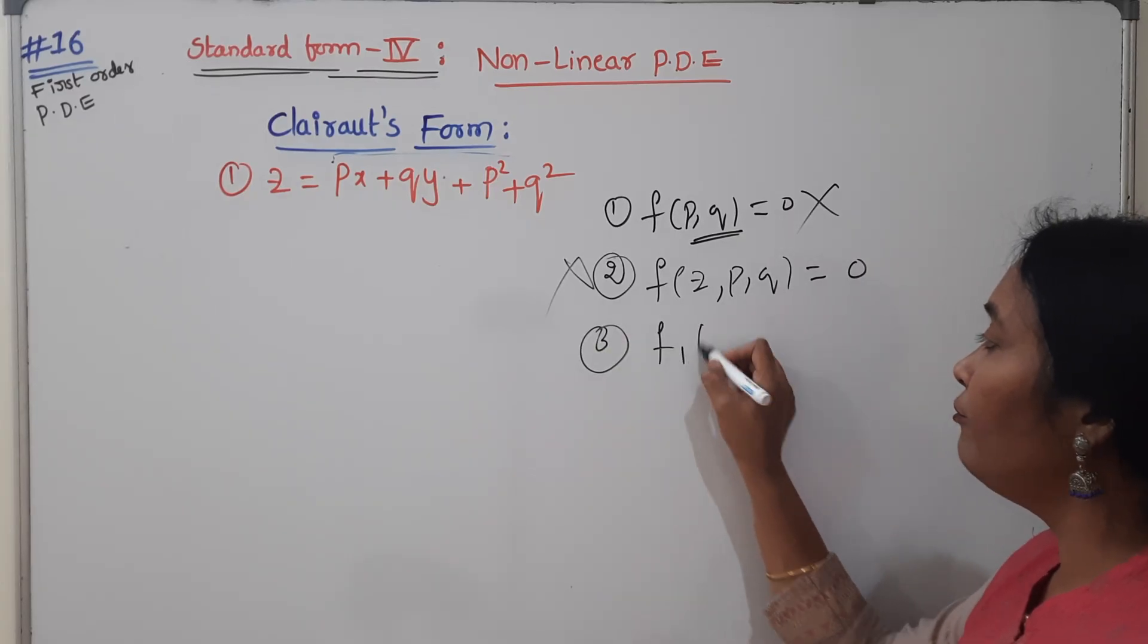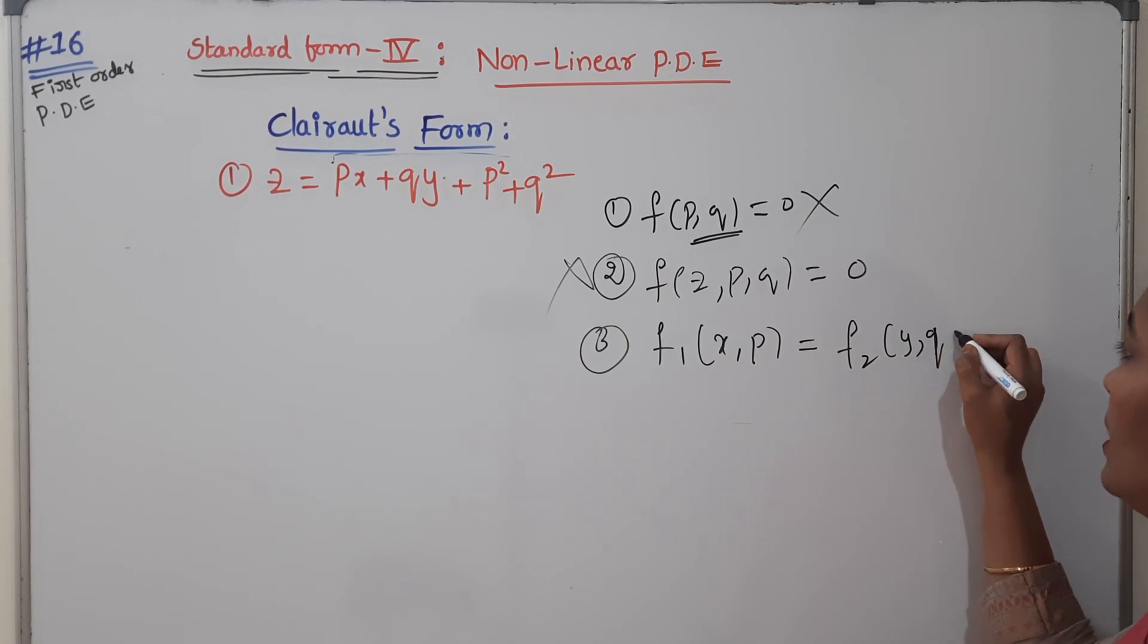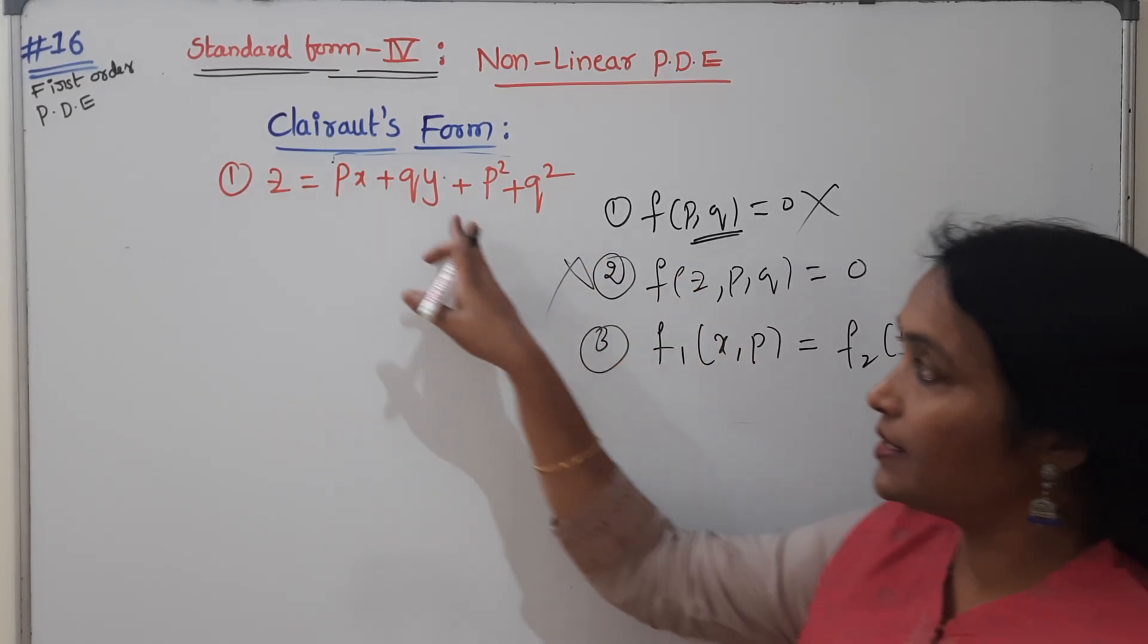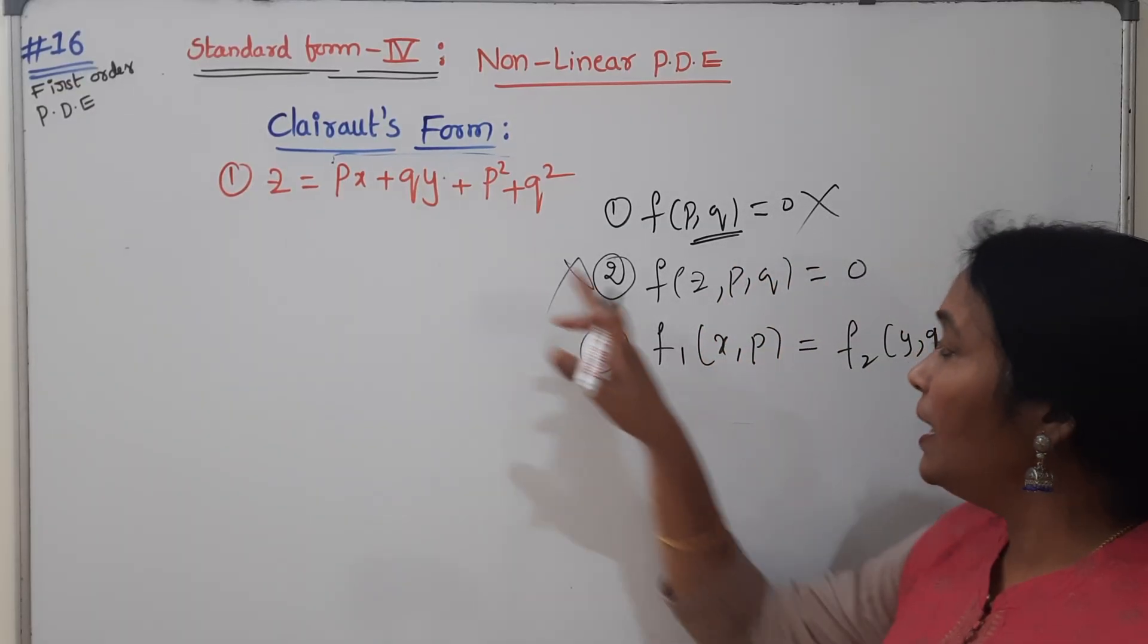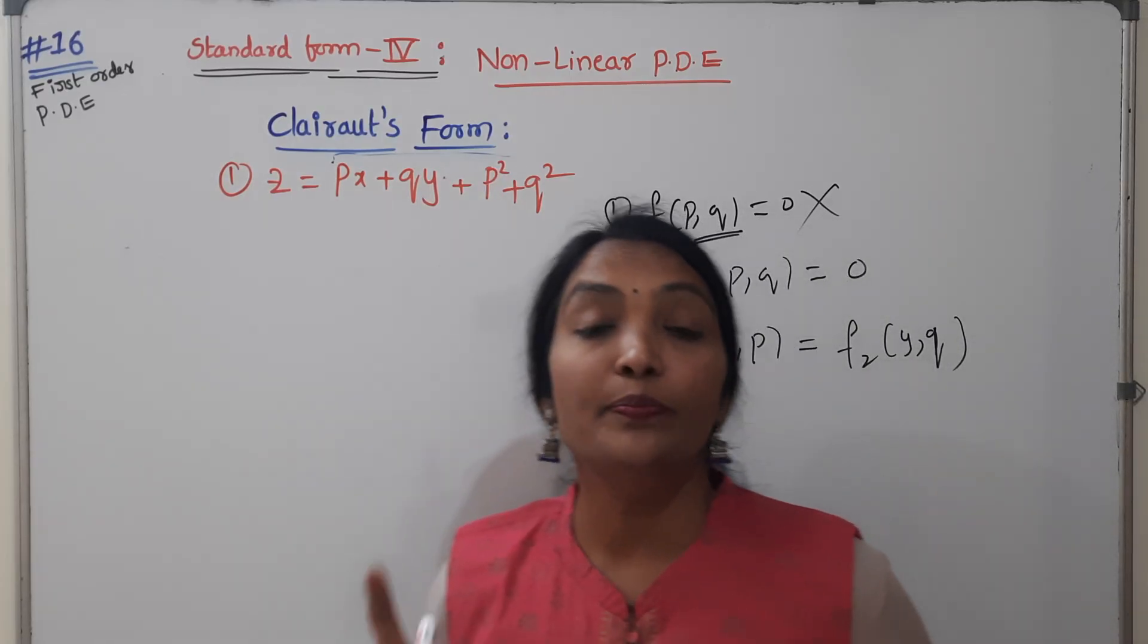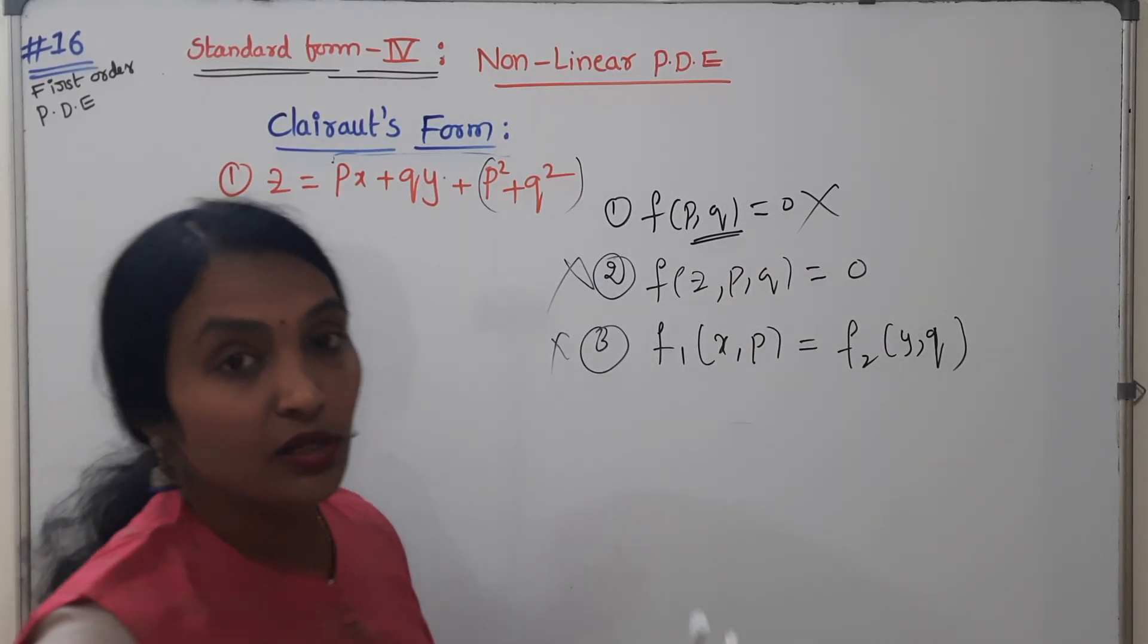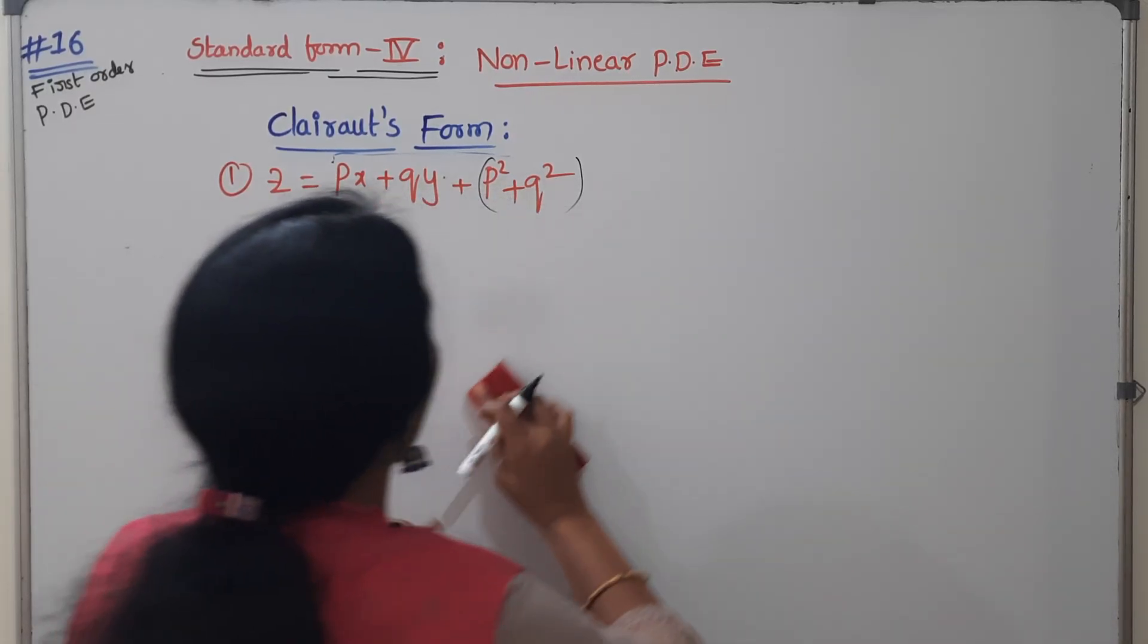What is our third form? F1 PQ equals F2 YQ, in this format FP only XP separate and YQ separate, but it is involving another P terms also, ZX, so this is not this. Then go for our standard form Clairaut's.